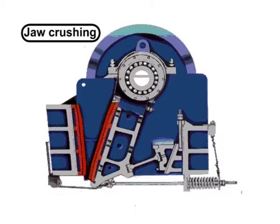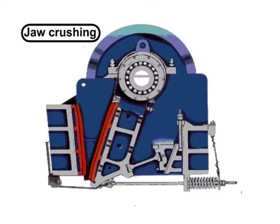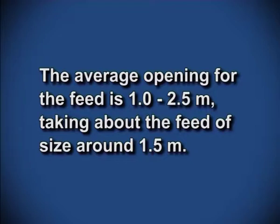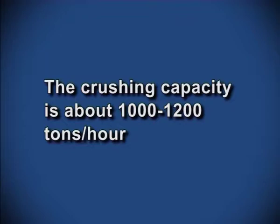Under crushers, we study the jaw crusher. As the name suggests and can be seen from the figure, one jaw is fixed while the other is mobile or swinging with an angle of 27 degrees, exactly like a human jaw. There is a V-shaped opening for the feed. The major force involved is compression. The frequency of the swinging jaw is as high as 400 times per minute, the average feed opening is about 1 to 2.5 meters, taking a feed size of 1.5 meters, and the crushing capacity is very high — about 1200 tons per hour.